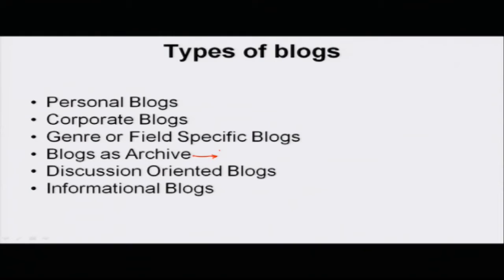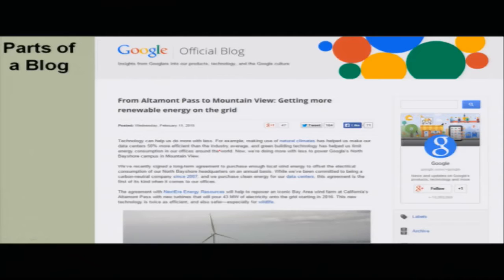Then there are discussion-oriented blogs where some bloggers post questions and ask their readers to comment on those questions. And there are informational blogs which are mostly factual in nature — for example, a blog about Jupiter would be an informational blog. Now we will try to analyze what a blog is.